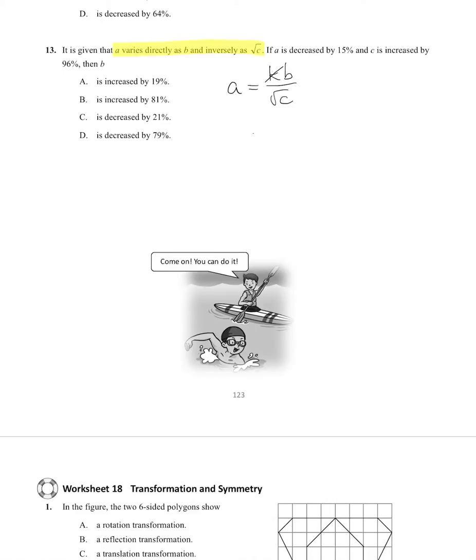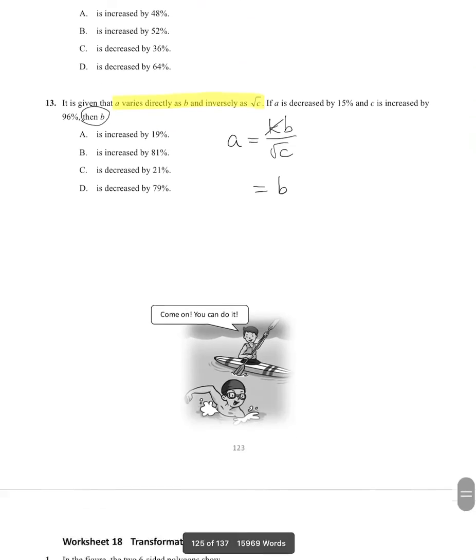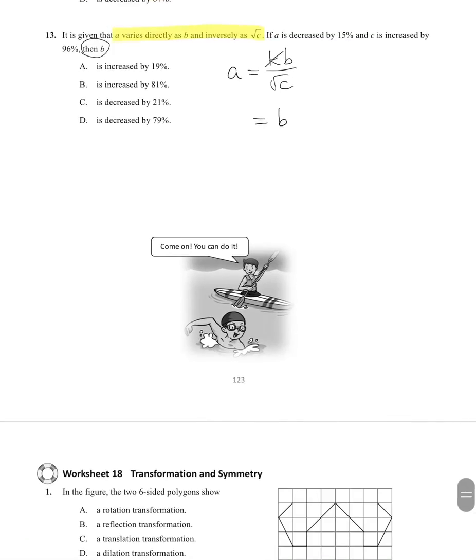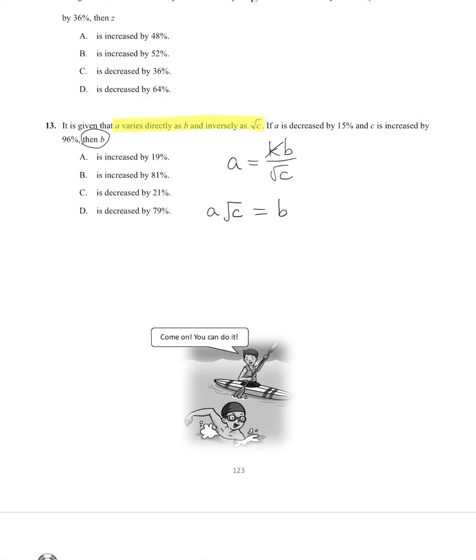But watch out - now we are asked to find B, so that means we want to make B the subject, and that requires us to multiply A with the square root of C. So rearrange so that B is the subject of the equation.